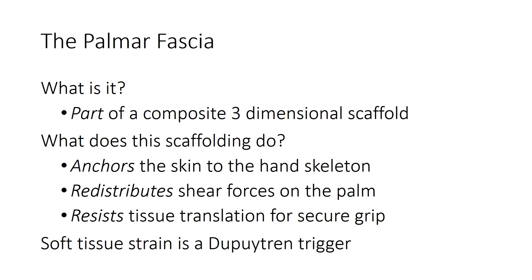We'll start with the palmar fascia. This is often thought of as the single structure involved with Dupuytren contracture, but that's an oversimplification. The palmar fascia is only one of many layers of a complex three-dimensional soft tissue scaffolding which extends from the skin down to the hand skeleton. This scaffolding anchors the skin to the hand skeleton and prevents the skin from sliding during grip. During normal use the scaffolding is subjected to a lot of mechanical stress and strain, which is thought to be a trigger to activate Dupuytren disease.